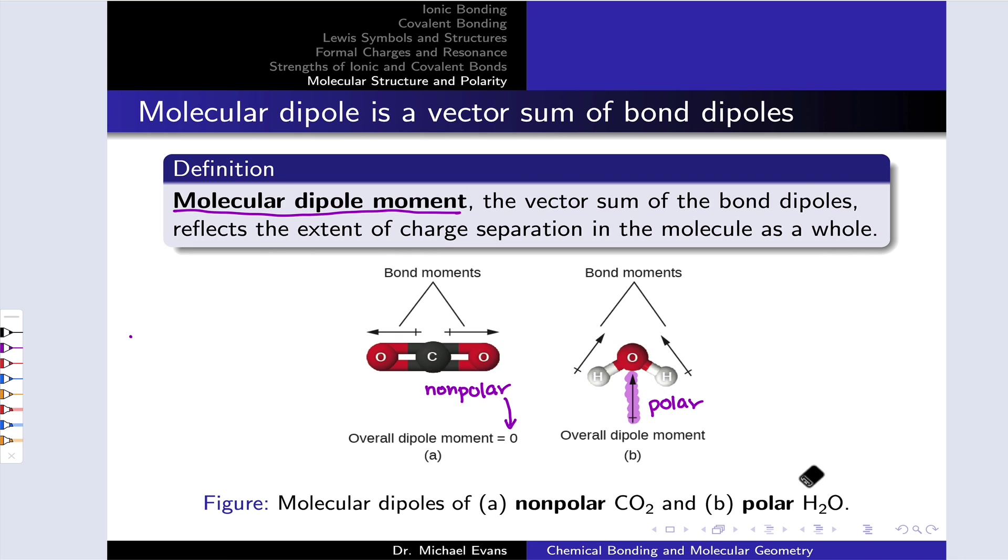For that reason, and because this is a pretty substantial overall molecular dipole vector, water is called polar. It's a polar molecule with a profoundly asymmetric distribution of electrons with more negative charge near the oxygen and more positive charge near the hydrogen.